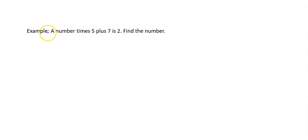So a word problem like this can be solved by an algebraic equation very easily. A number times 5 plus 7 is 2. Find the number.